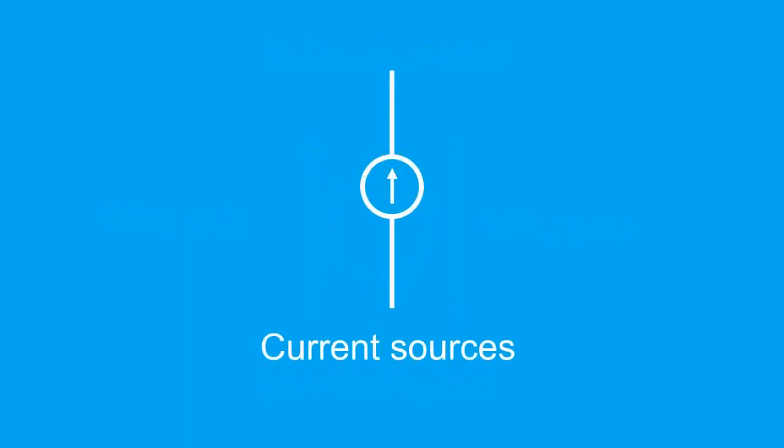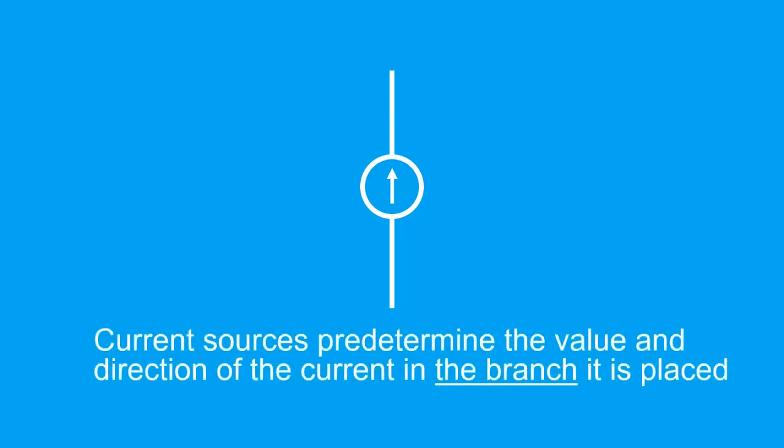The next device we want to discuss is the current source. Its purpose is to predetermine the value and direction of the current in the branch it is on. The direction is indicated by the arrow, which in this case, the current flows upwards.